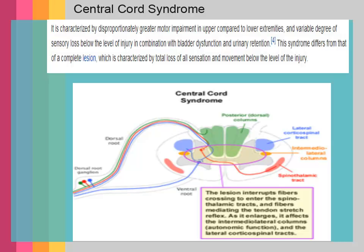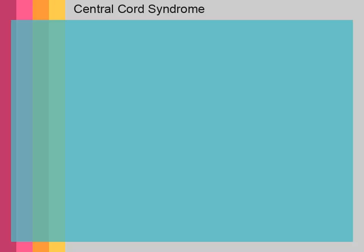The so-called central cord syndrome affects the cervical spine and is the result of either trauma or perhaps a syrinx, in which the central portion of the spinal cord has the lesion, and therefore the crossing spinothalamic fibers are affected. Depending on the size of the central lesion, there is variable involvement of the intermediolateral column — and therefore autonomic dysfunction — and also variable lateral corticospinal tract involvement. But in general, one sees greater motor disturbance involving the upper extremities than the lower extremities.